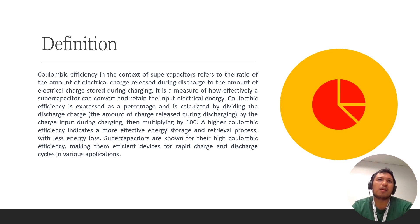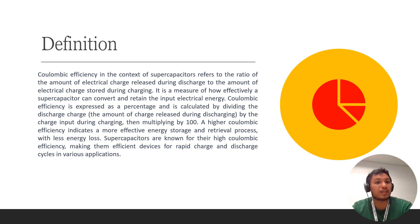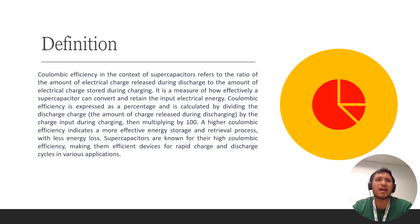For example, when your charging specific capacity is 100 farad per gram and your discharge specific capacity is also around 100 farad per gram, your coulombic efficiency is 100 percent. However, if your charging and discharging specific capacity are not the same — for example, you charge and get 100 farad per gram but during discharge you only get 50 farad per gram — you only have 50 percent efficiency, which is not good.